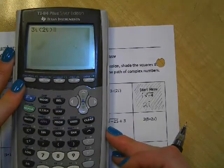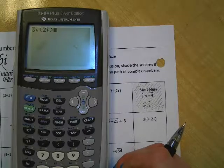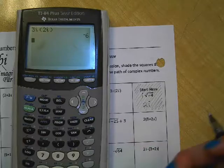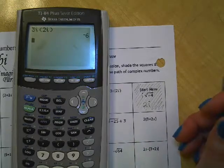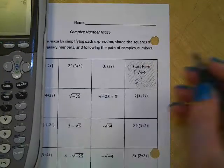And we know if we did that by hand, we would get 6i squared, and then i squared is negative 1, and so that's 6 times negative 1, which is negative 6, but our calculator does that quickly and just tells us that's negative 6.